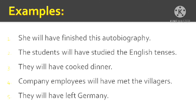To identify the future perfect tense: if you find 'shall' or 'will', the sentence is 100% in future tense. If 'have' follows shall/will, that indicates the perfect form. Followed by V3 — the past participle — means 100% the sentence is in future perfect tense. The formula is: shall/will + have + V3. The sentence is: 'She will have finished this autobiography by next Sunday, next month, next year, or by the upcoming Diwali.'